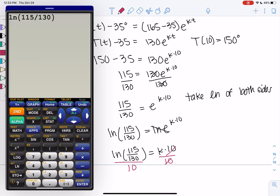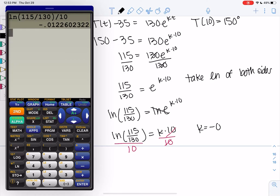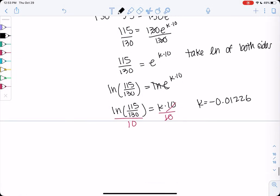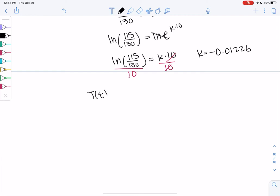So ln of 115 over 130, all in parentheses, and then divide by 10. And we get a negative k because, remember, the difference is decaying. So k is negative 0.01226. So hopefully that's enough decimal places. But definitely don't round to just one or two. I'm going to go out to five. I like to keep a lot. So my exponential model is T of t minus the initial of 35, the room temperature of 35, equals 130e to the negative 0.01226 and then to the t power because t changes.